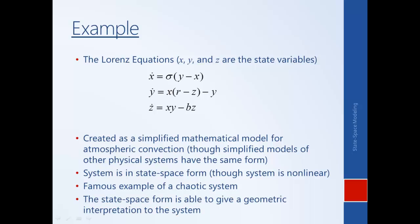Representing the system in state space form gives you a geometric interpretation that can provide real insight — and this is where the name 'state space' comes from. Since we have three state variables, you can imagine a space with X, Y, and Z axes, and look at how the system moves through this state space — like an object moving along a trajectory. These variables aren't necessarily positions; X could be velocity, Y could be voltage, and Z could be pressure, but observing how the system state moves through the space gives insight into its behavior.